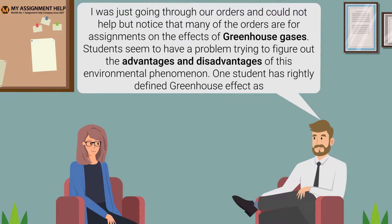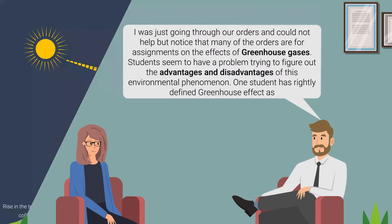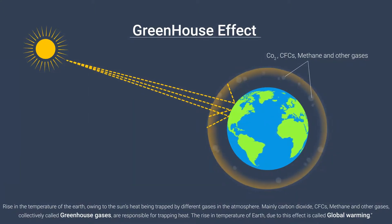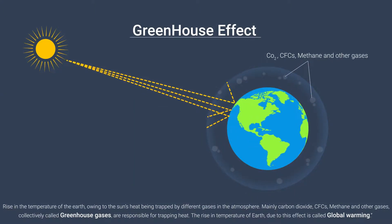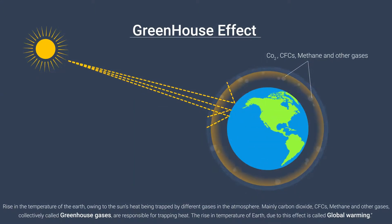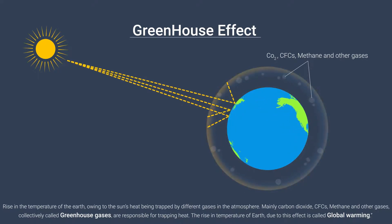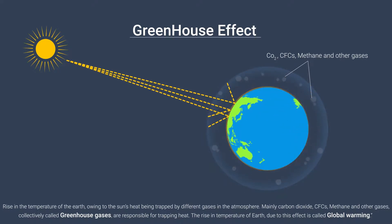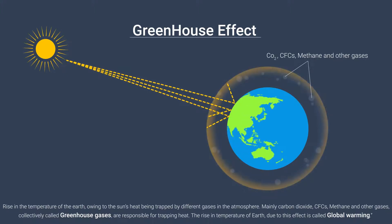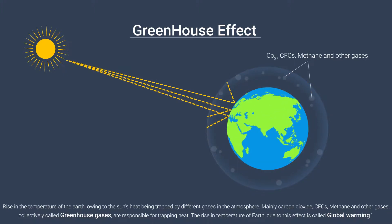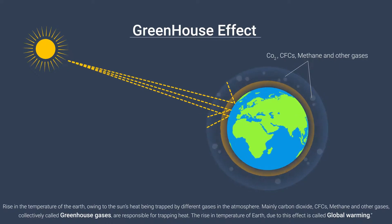I was just going through our orders and could not help but notice that many of the orders are for assignments on the effects of greenhouse gases. Students seem to have a problem trying to figure out the advantages and disadvantages of this environmental phenomenon. One student has rightly defined greenhouse effect as the rise in the temperature of the earth, owing to the sun's heat being trapped by different gases in the atmosphere — mainly carbon dioxide, CFCs, methane and other gases, collectively called greenhouse gases, are responsible for trapping heat. The rise in temperature of earth due to this effect is called global warming.